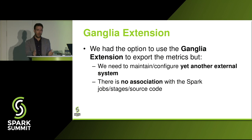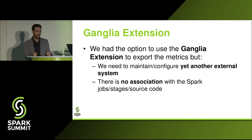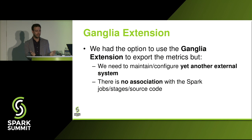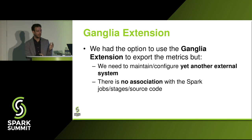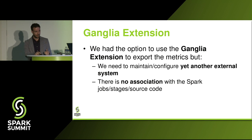One option we had was to use the Ganglia extension provided by Spark, to export metrics there. But there were some drawbacks: we needed to maintain and configure yet another external system, and there was no association between the Spark jobs, the stages, the source code, and the metrics that Ganglia was reporting.